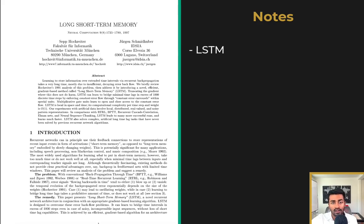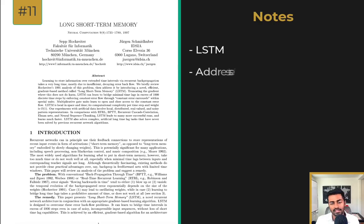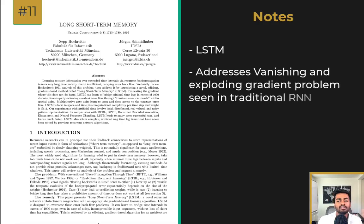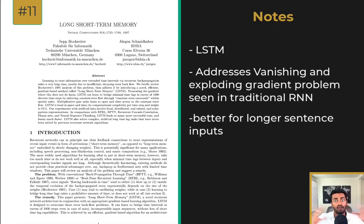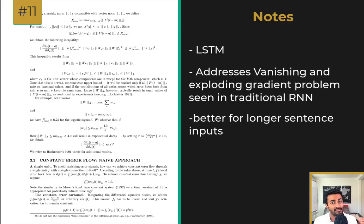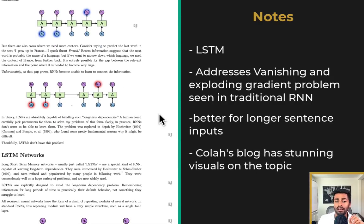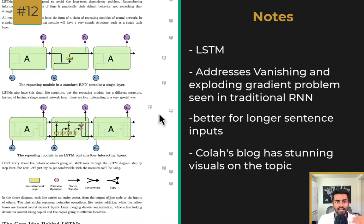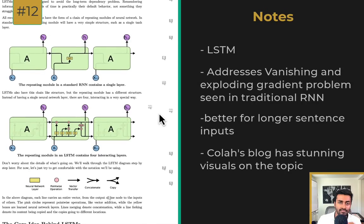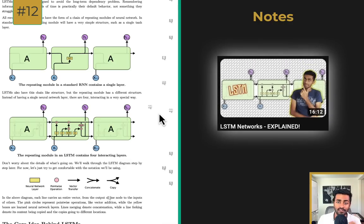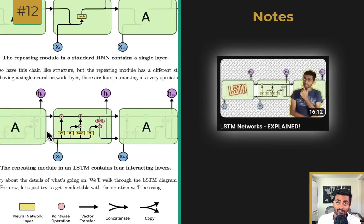Next up is Long Short-Term Memory. The main issue with traditional recurrent neural networks is that the gradients would either explode or vanish. The LSTM architecture was introduced to combat this issue for longer inputs. For a clearer explanation, I would recommend a popular blog post on this topic by Kola, who explains LSTMs very well with stunning visuals. I also have a full companion video on this topic.